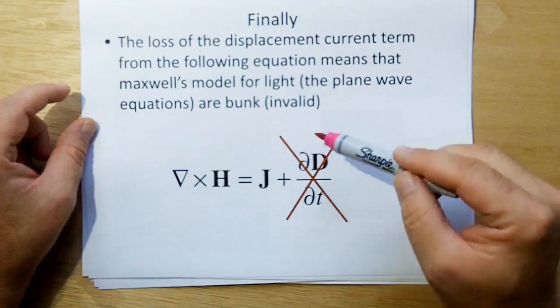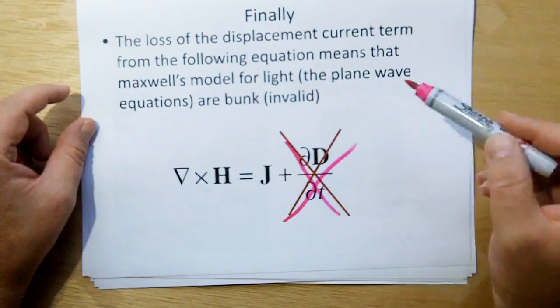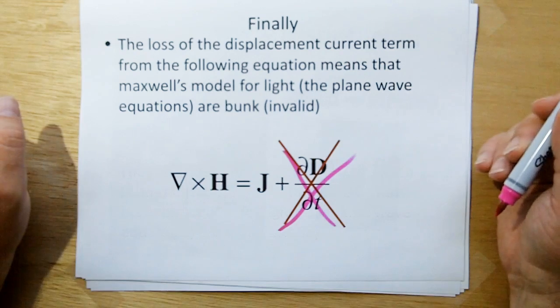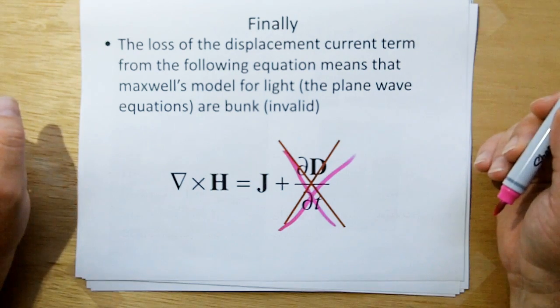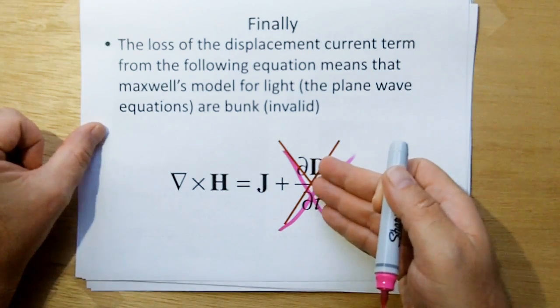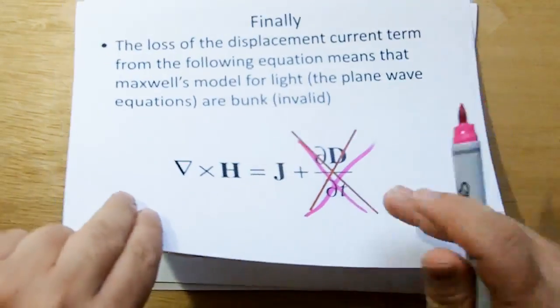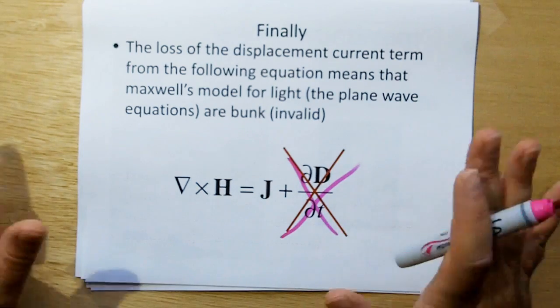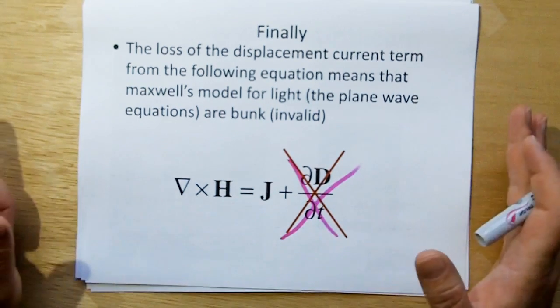So the loss of the displacement current term means that Maxwell's model for light, the plane wave equation, is bunk. It's completely invalid. He needed this part to be able to show the plane wave equation. So that's pretty much the whole video in a nutshell, in like under five minutes, to give you the whole idea of what's going on.